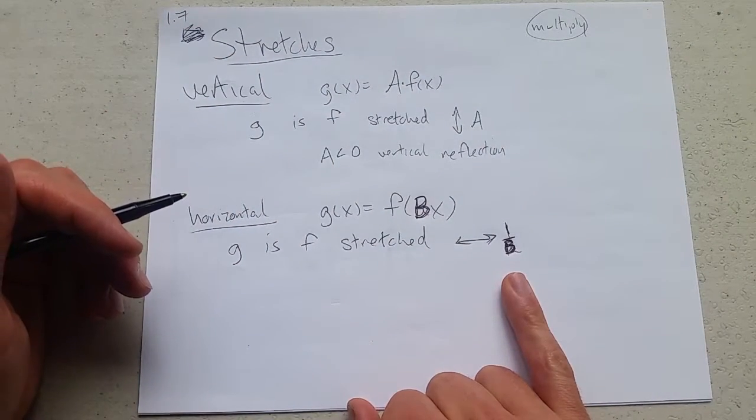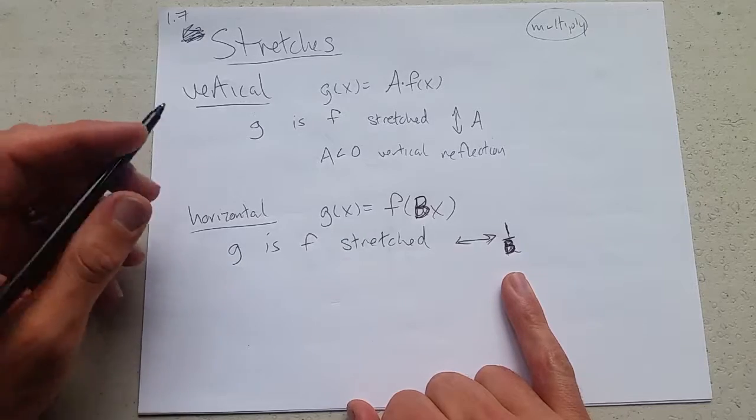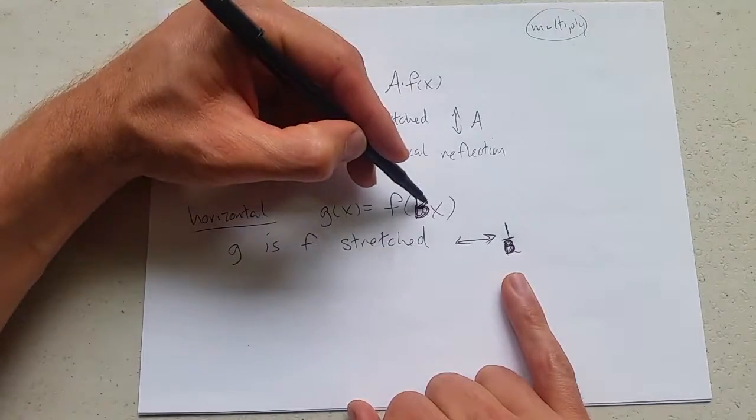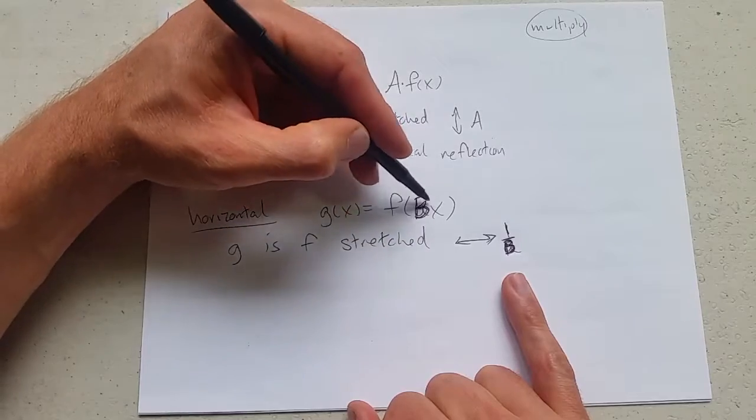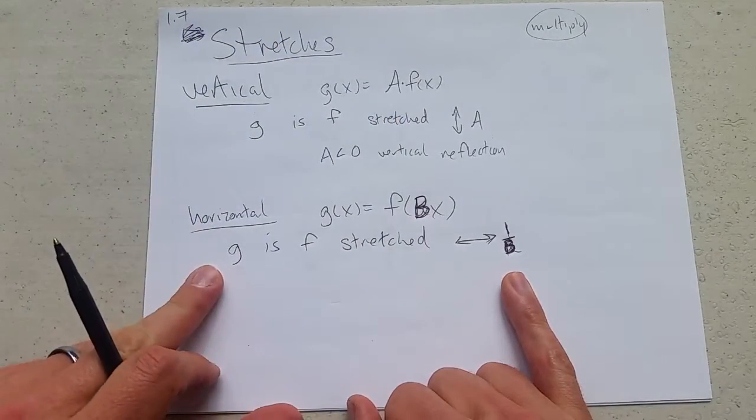And you'll notice b should never be 0. What happens if b is 0? Then you're just taking 0, you're just having f of 0. So that's pretty boring. b won't be 0.